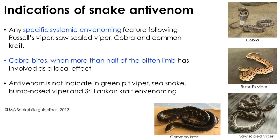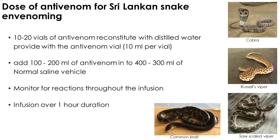Antivenom is not indicated in green pit viper, sea snake, hump-nose viper, and Sri Lankan krait envenomation. According to Sri Lankan guidelines for snake bite management, a dose of 10 to 20 vials of dry powder antivenom should be administered in the presence of an indication. They are reconstituted with distilled water provided with the antivenom vial. 100 to 200 milliliters of reconstituted antivenom is added to 400 or 300 milliliters of normal saline, giving a final volume of 500 milliliters. It is administered intravenously over one hour, with monitoring for reactions especially during the first 15 minutes.